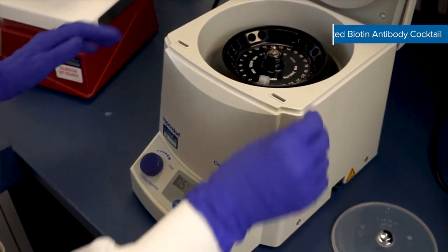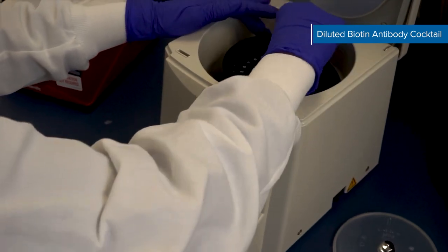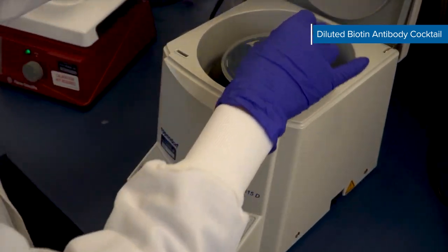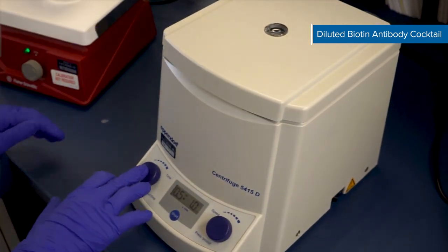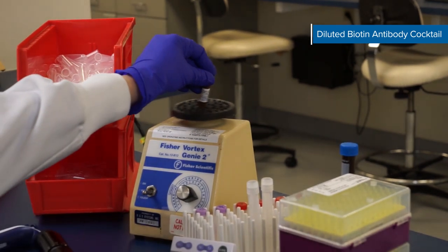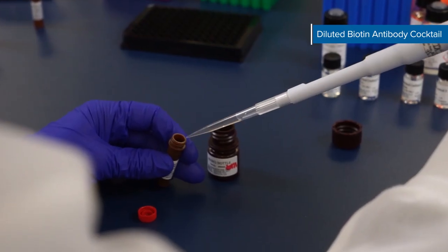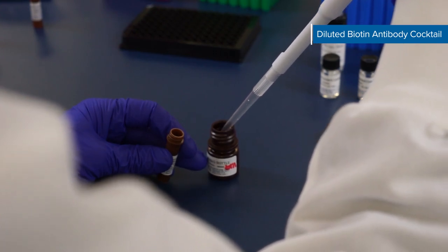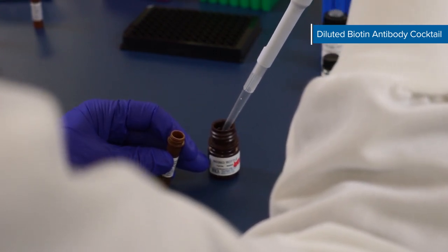Next, prepare the diluted biotin antibody cocktail the same way you prepared the diluted microparticle cocktail. Centrifuge the vial for 30 seconds at 1,000 times the force of gravity. Then gently vortex the vial without inverting it. Dilute the biotin antibody cocktail in diluent RD2-1 and mix gently. Refer to your kit booklet for specific volumes.